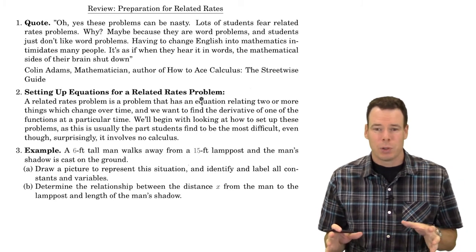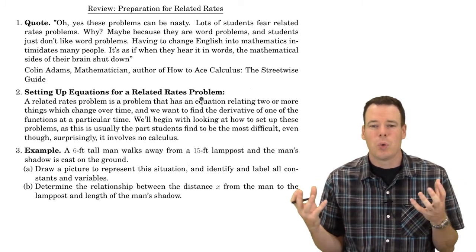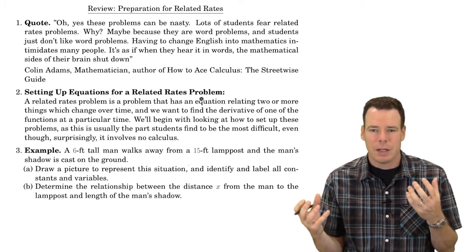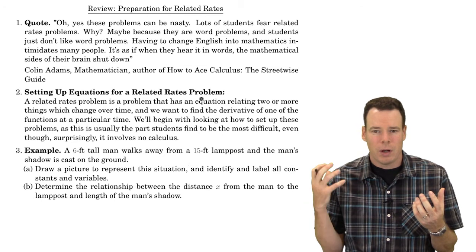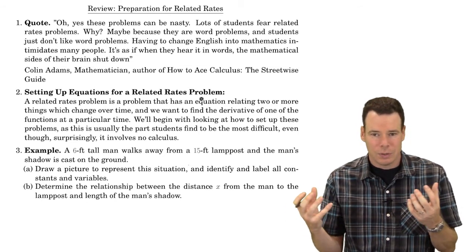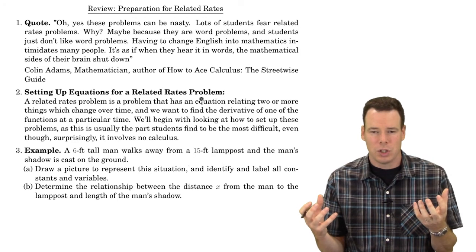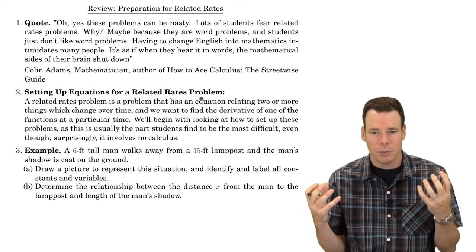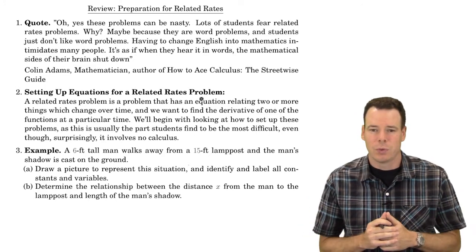A related rates problem is a problem where you've got essentially two quantities, each of them changing in time, and you know that the quantities depend on each other — they're related in some way. So if I know how fast one quantity is changing, I should be able to determine how fast the other quantity is changing. That's the goal of the related rates problem.